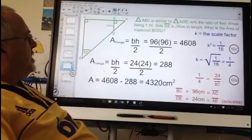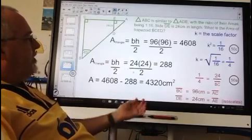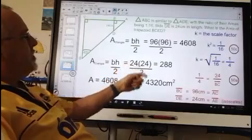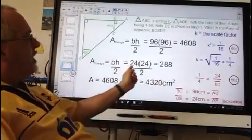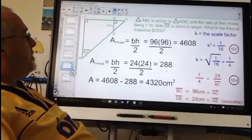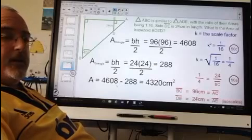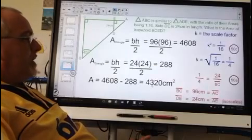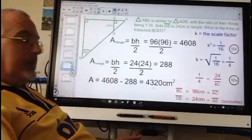Then we do the smaller triangle, triangle ADE, and we use the same area formula, of course. In this case we are going 24 times 24 over 2. The logic is the same, how we got those values, and we get an answer of 288. In order to find the area of the trapezoid we simply have to subtract the smaller triangle's area from the larger's. And we end up with 4320 cm squared. Of course it is the same answer as we get with the other method. And we remember to apply our unit of measure.